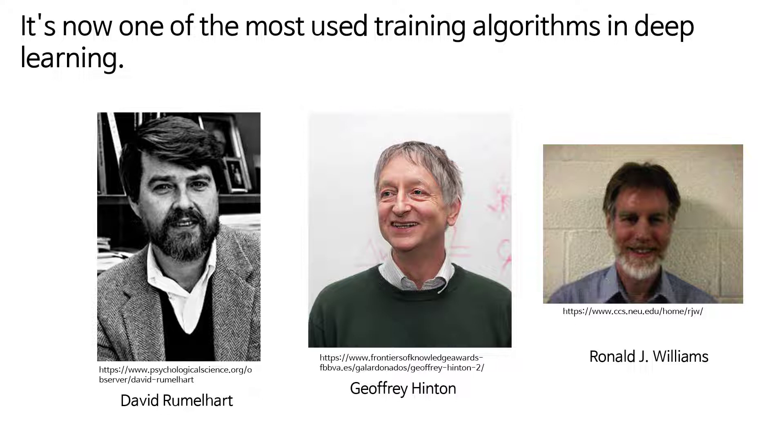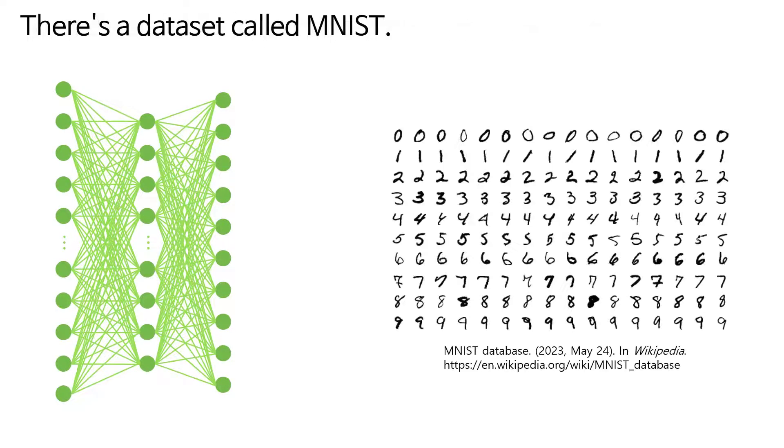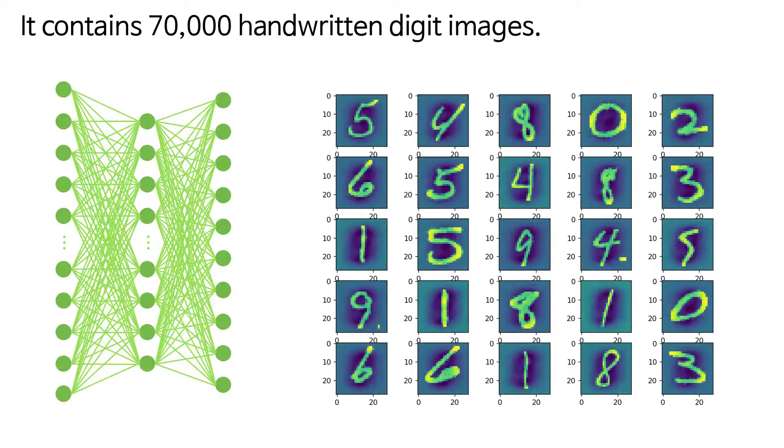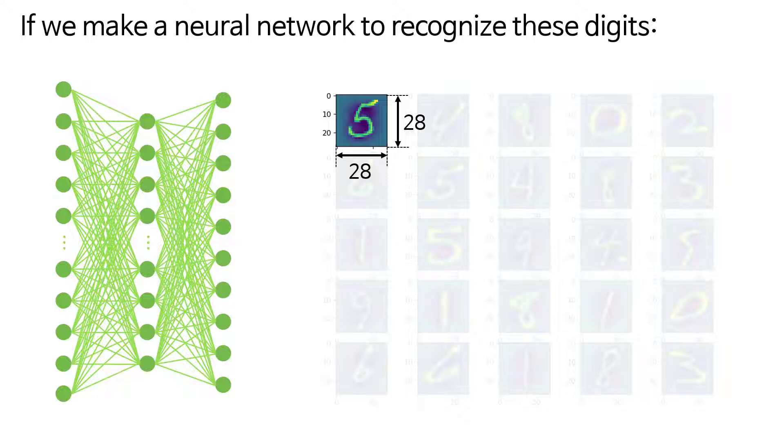It's now one of the most used training algorithms in deep learning. To understand its importance, let's look at an example. There's a dataset called MNIST. It contains 70,000 handwritten digit images. Each image has 784 data points, 28 times 28.